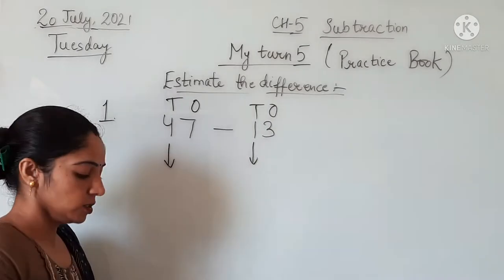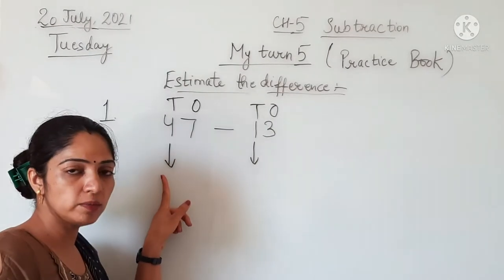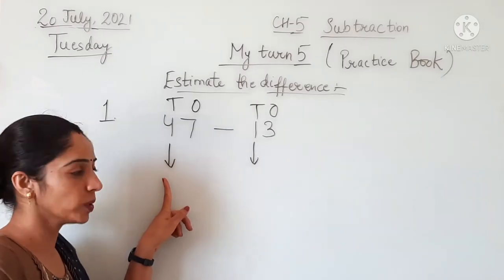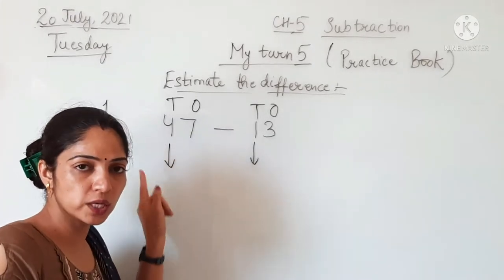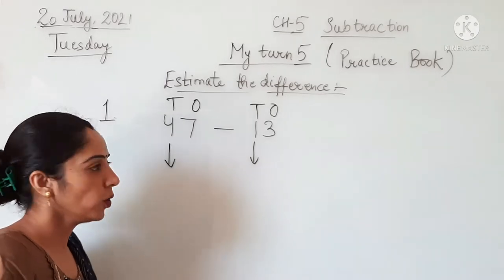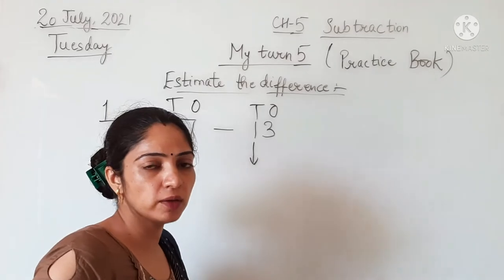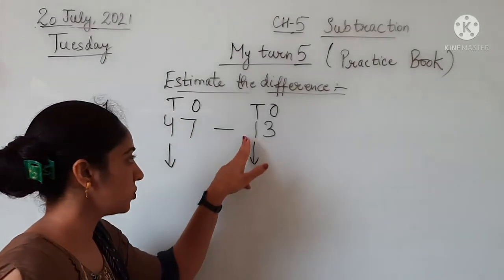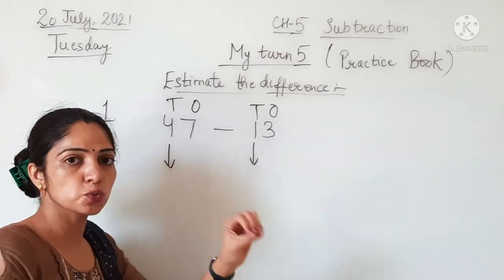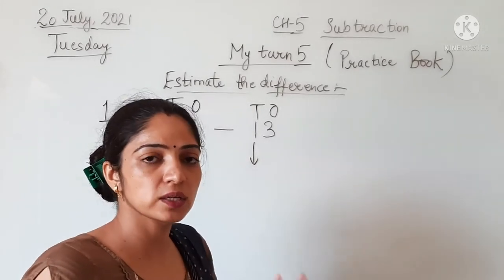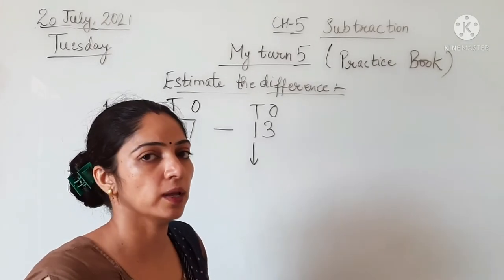Check in your book which place you have to round off to. The tens place - the arrow is given under the 4, and in 13, the arrow is also given at tens place, under the 1. It means you have to round off these numbers to the nearest 10.